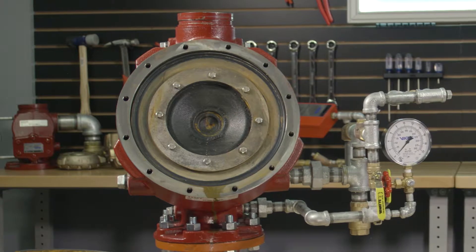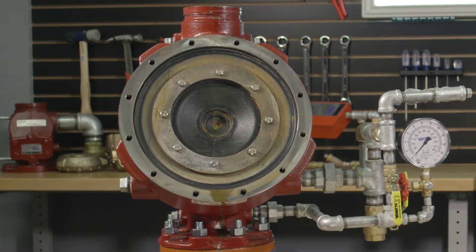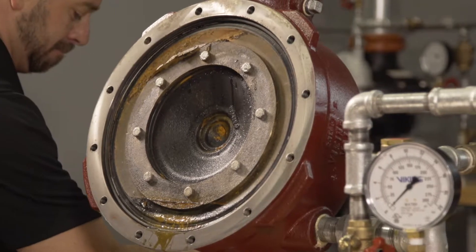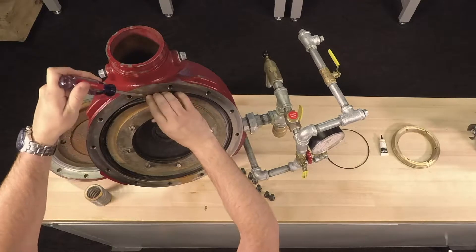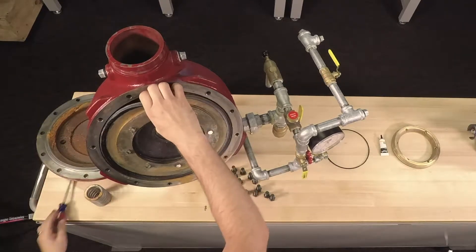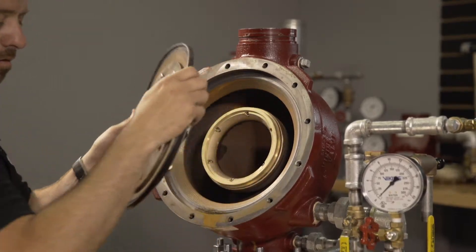The clapper assembly is not bolted or screwed down into the valve and is assembled as a single part. To remove the clapper assembly, you will need to gently place a flathead screwdriver in between the body and the upper diaphragm. This will allow you to remove the clapper assembly.